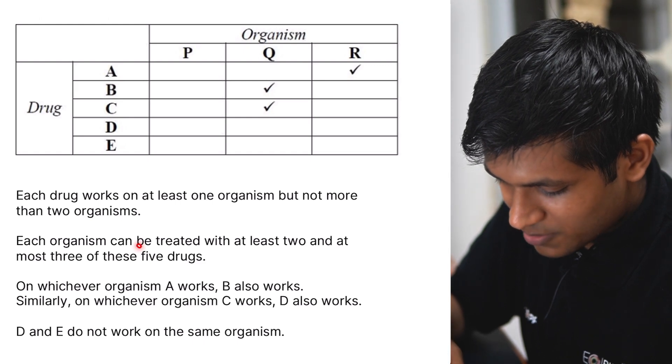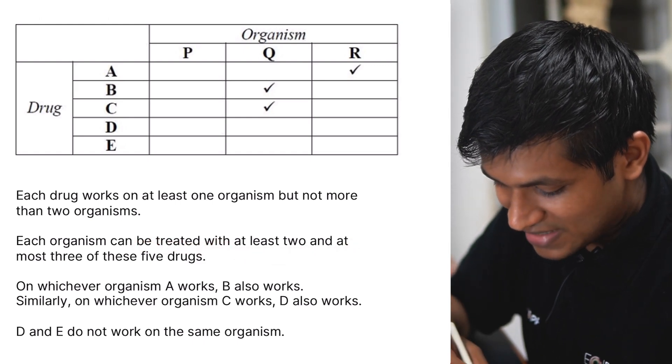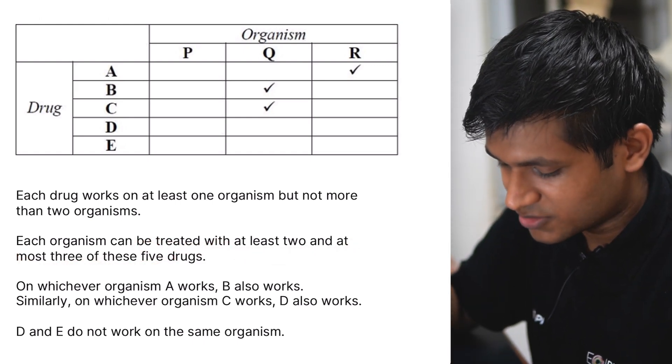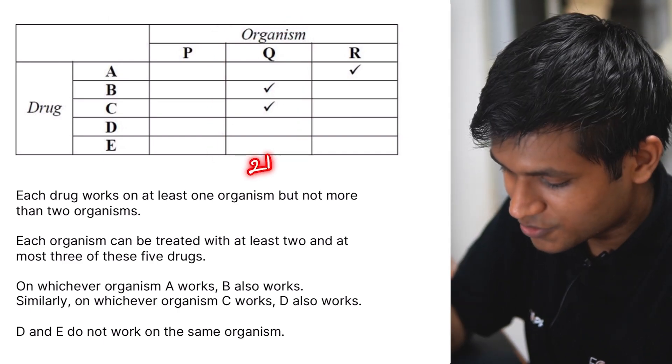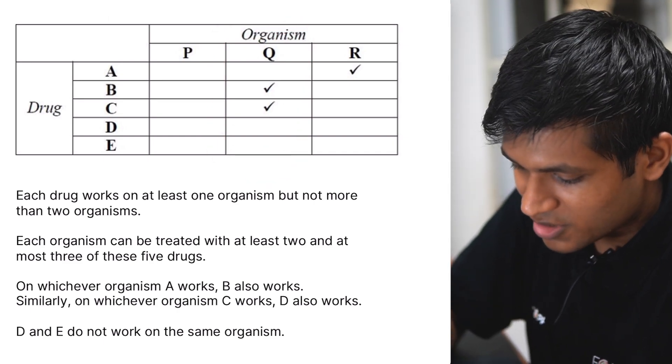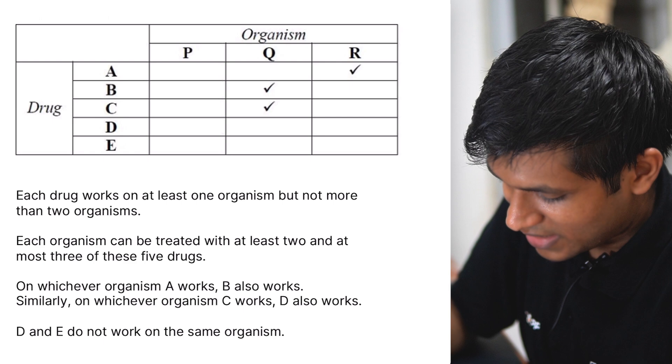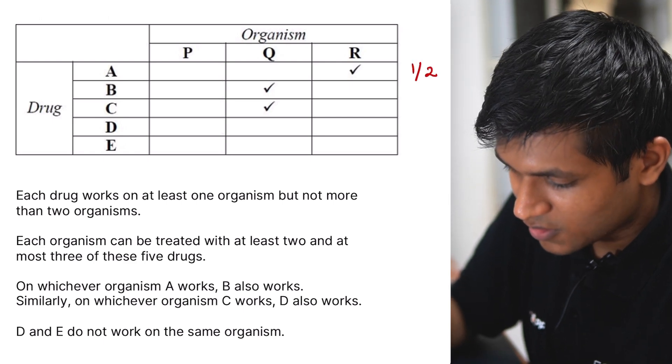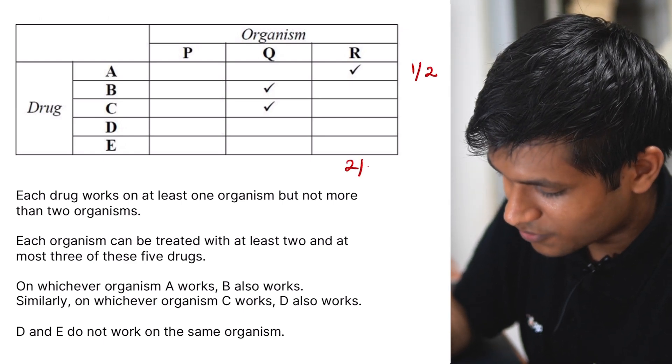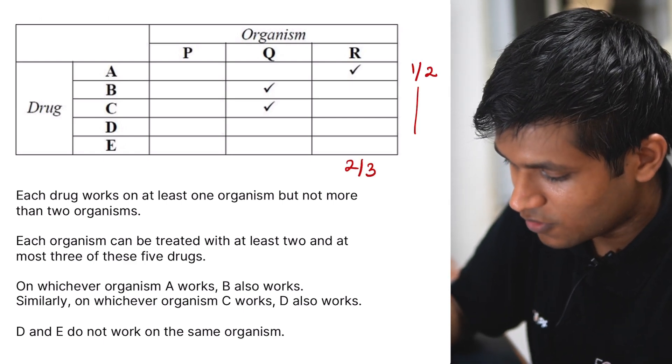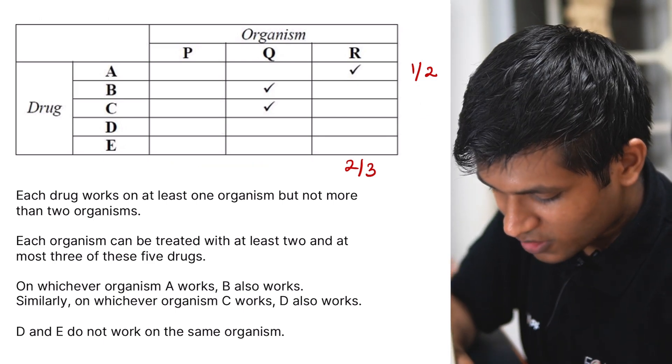Now, each organism can be treated with at least two and at most three of these five drugs. So if I look at the columns like this, it can have either two or three tick marks. Row may have one or two. Column may have two or three.